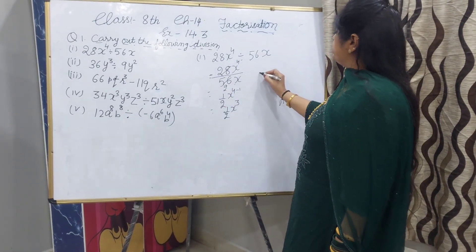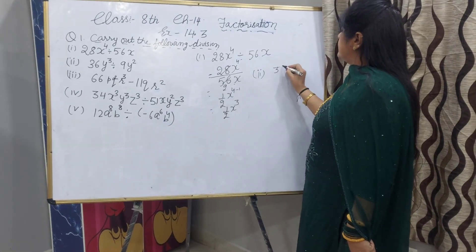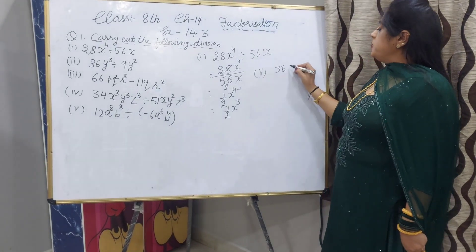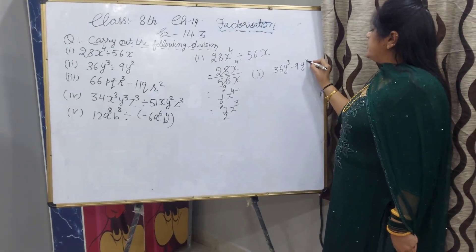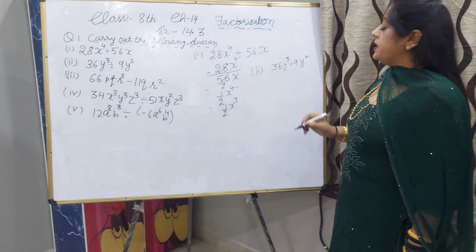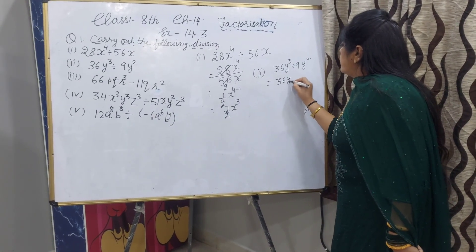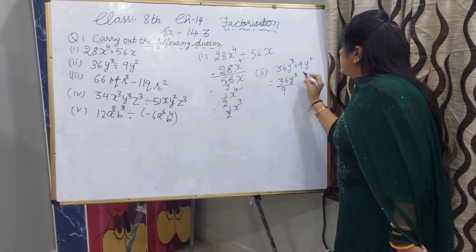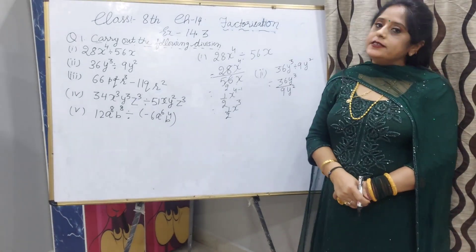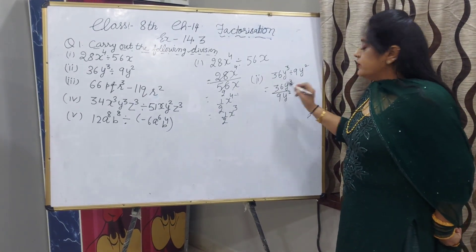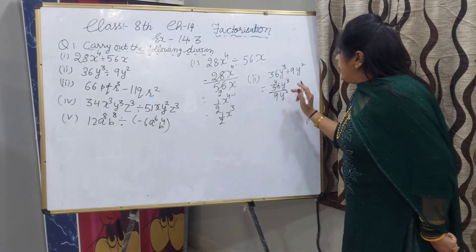Now, second part: 36y^3 minus 9y^2. We have to divide. 36y^3 and 9y^2. We can write 9y^2 as a denominator. 9 goes into 36 four times. And bases are same.